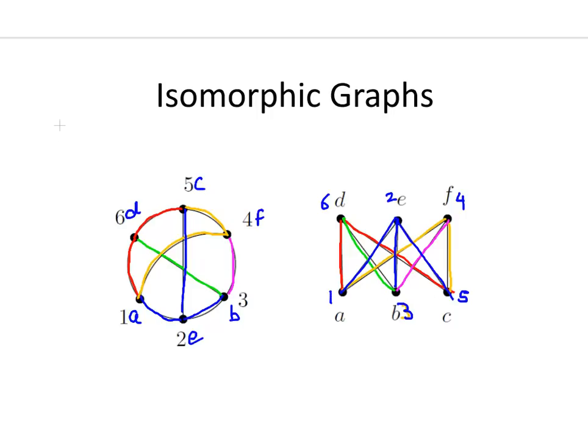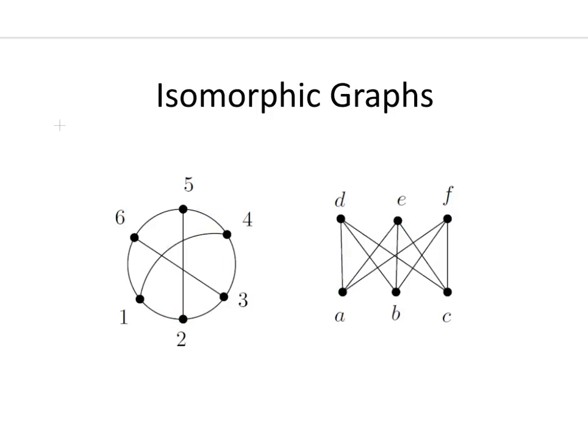We successfully showed that the edges are equivalent to each other if we allow 6 to equal D, 5 to equal C, 4 to equal F, B to equal 3, 2 to equal E, and 1 to equal A. So, moving on to the next one.